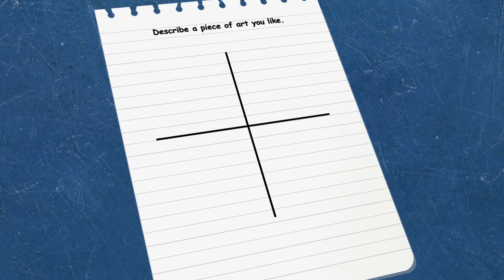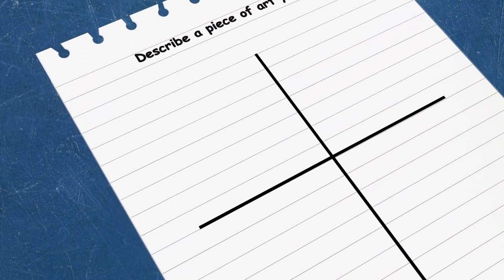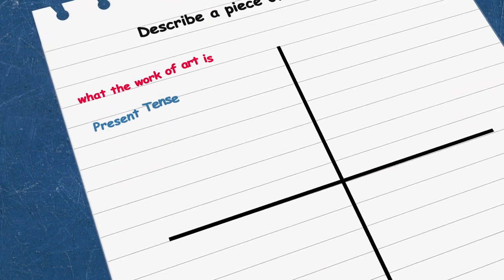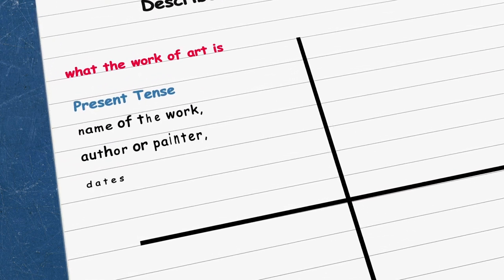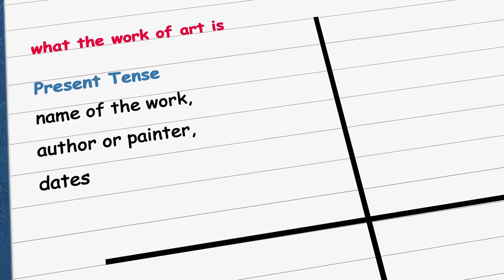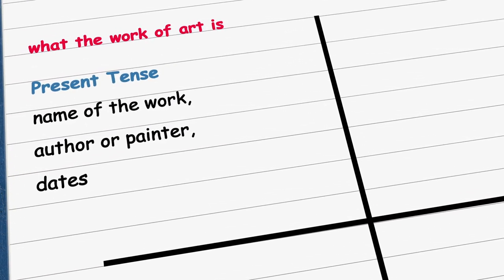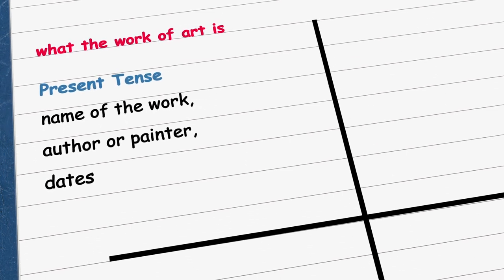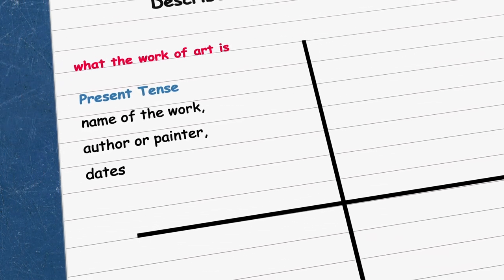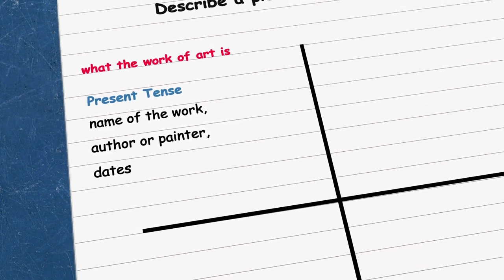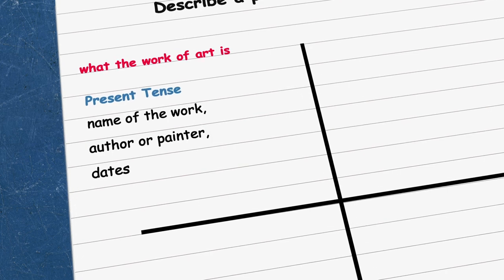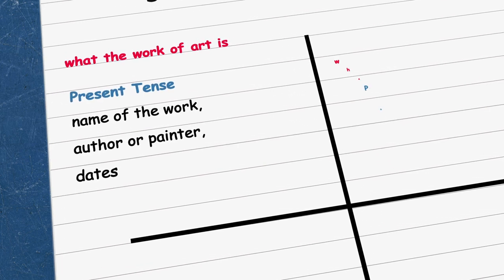The question is to describe a piece of art that you like. For the first cue — what the work of art is — you need to use the present tense and think of a name of a work of art that you like. Remember the author or the painter, and remember maybe the dates or any relevant detail.